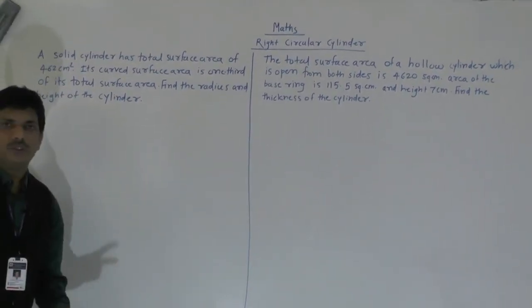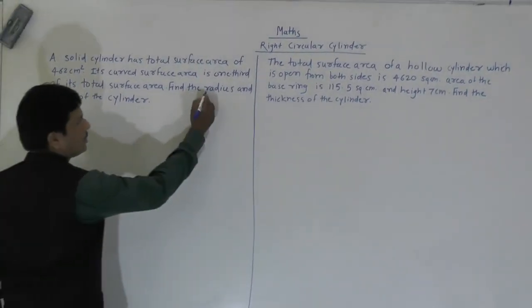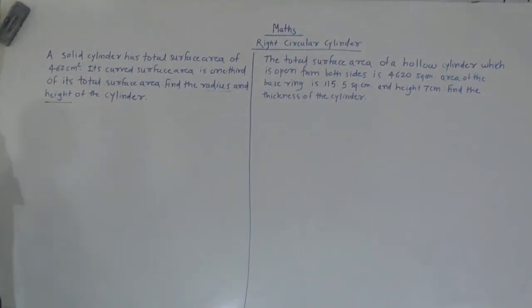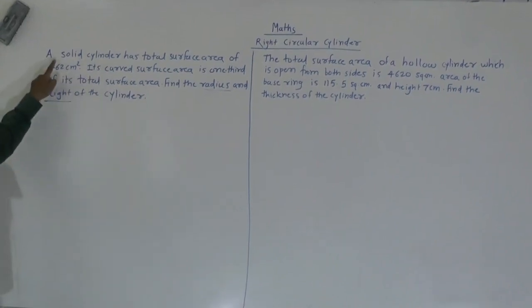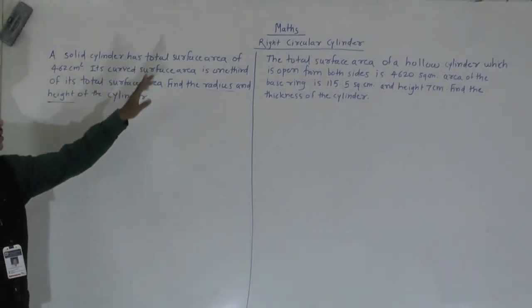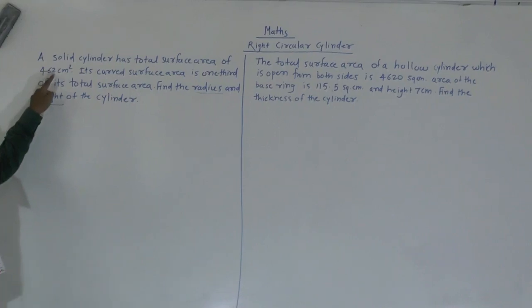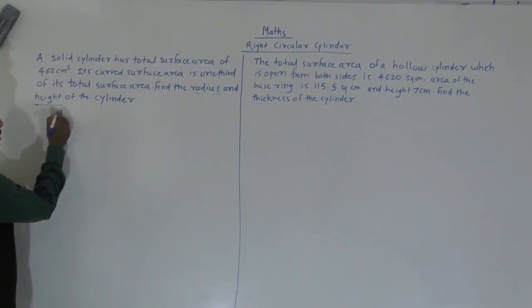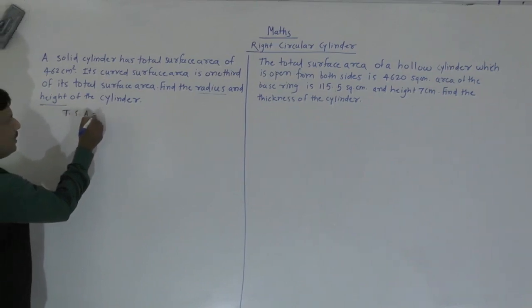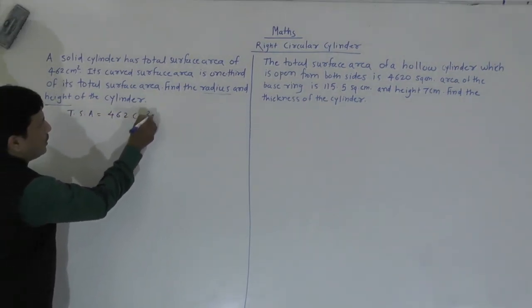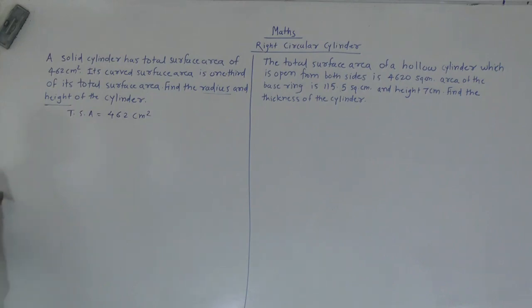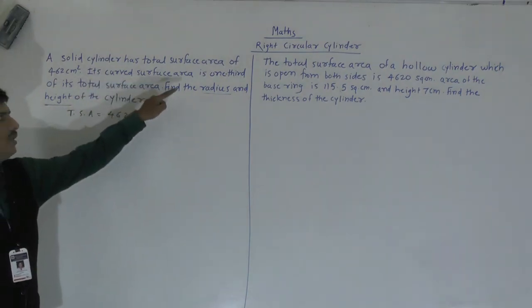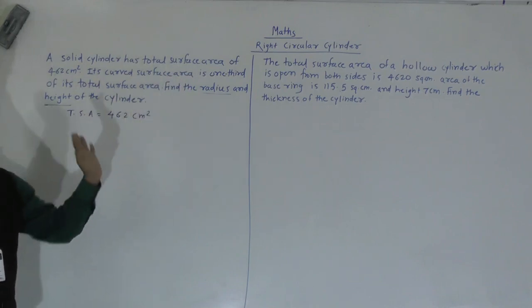Here we have to find out two things: radius of the cylinder and height of the cylinder. What is given here? The solid cylinder has total surface area 462 cm². So total surface area is given as 462 cm². And one more condition: its curved surface area is one-third of its total surface area.